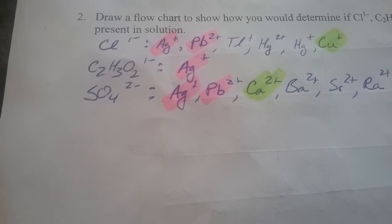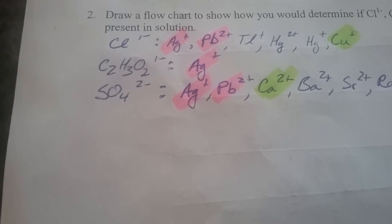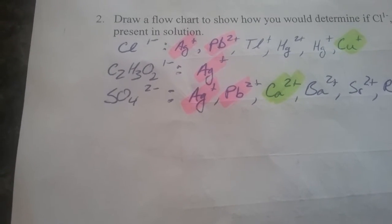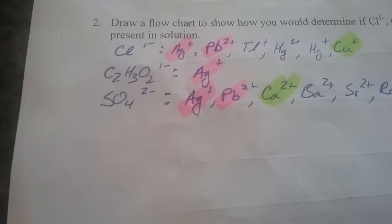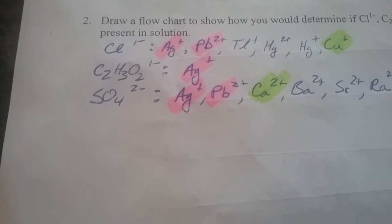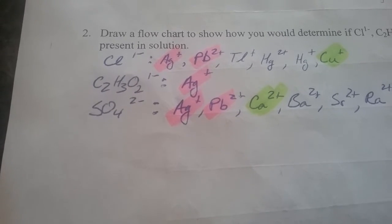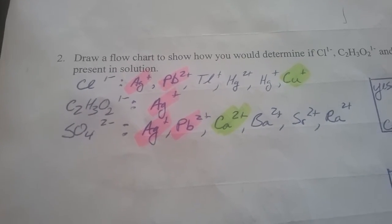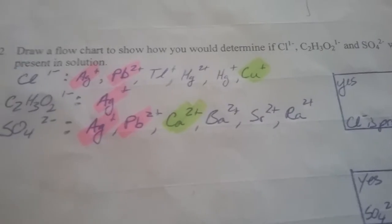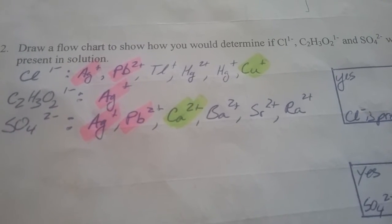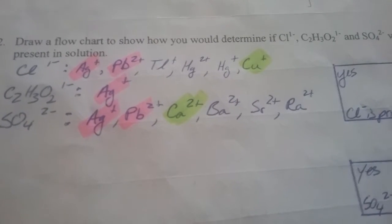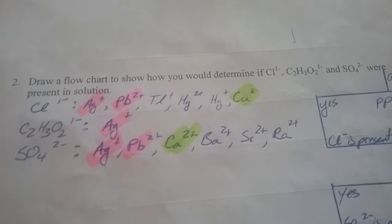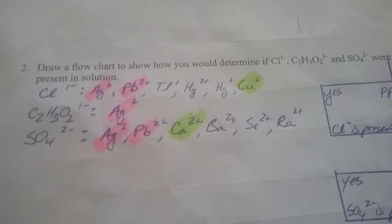We've identified in pink the common ions found between at least two out of three of these. The silver ion creates a precipitate with all three, and lead(II) specifically makes a precipitate reaction with the chloride and sulfate ions. So we don't want to use those in the first round. Looking at the other four in each list: tellurium, mercury(II), mercury(I), and copper(I) for the chloride side; and calcium, barium, strontium, and radium for the sulfate side. There's no overlap between those two sets of four.